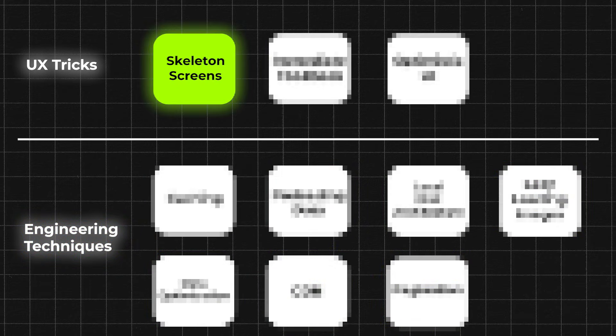Trick number one is skeleton screens. If you have blank screens or spinners, replace them with skeleton screens. This gives the illusion that the page is loaded and in transition to show, preventing the user from thinking the page has stopped working. It also makes navigation feel faster by showing the user how the page will look before it's loaded.